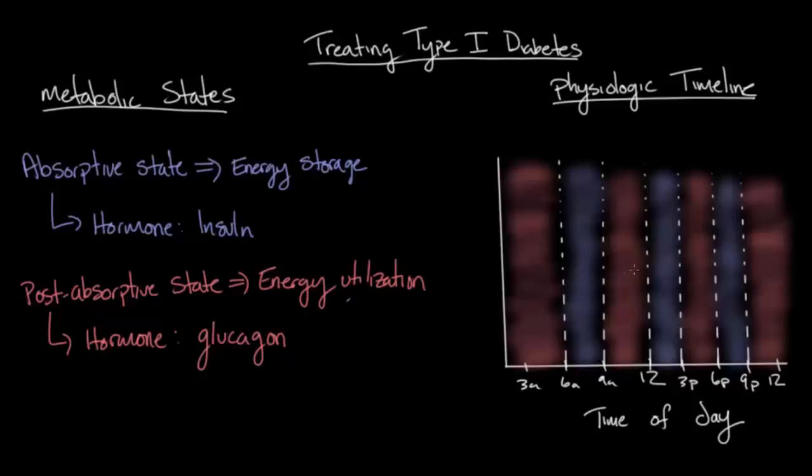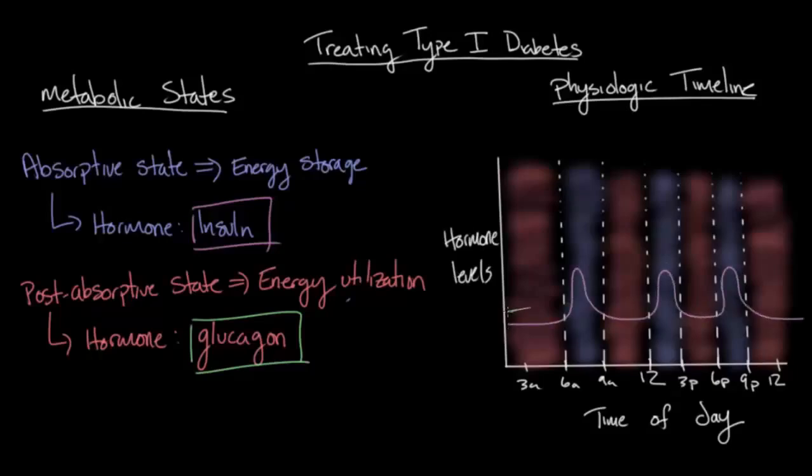These changes back and forth between metabolic states are driven by these hormones, insulin and glucagon. So on the y-axis here, let's put in these hormone levels. In purple we'll put insulin, and in green we'll do glucagon. What you can see from this is that it's really insulin that's driving these changes between the post-absorptive state and the absorptive state. Glucagon also plays a role, but its level doesn't vary nearly as much as insulin's level throughout the day.